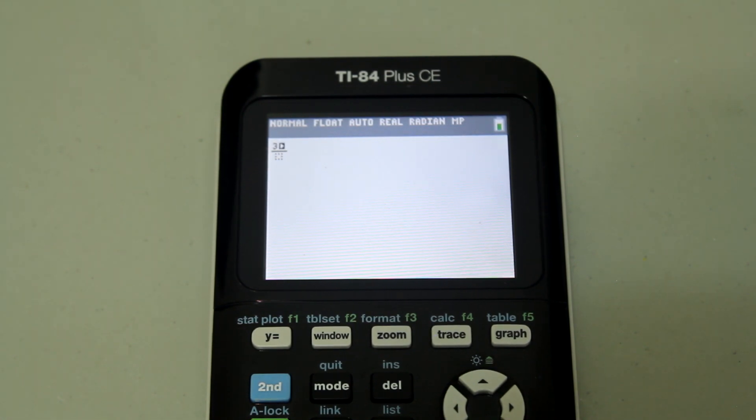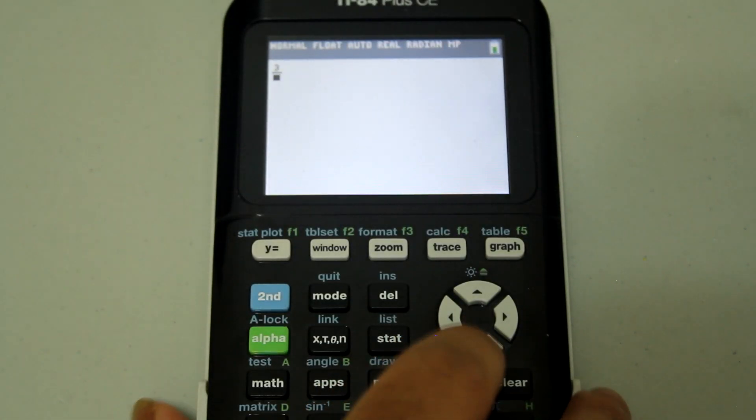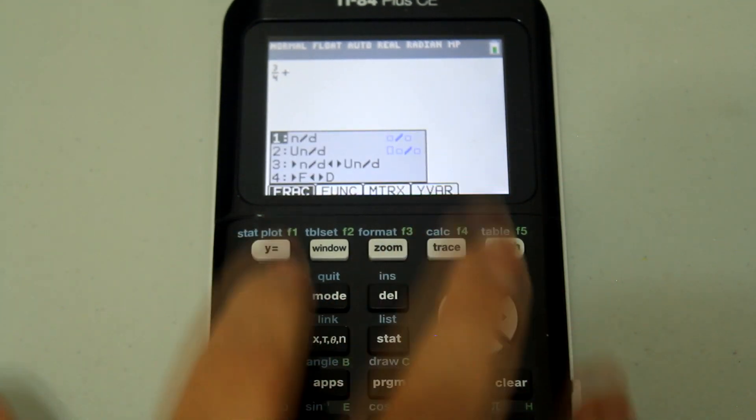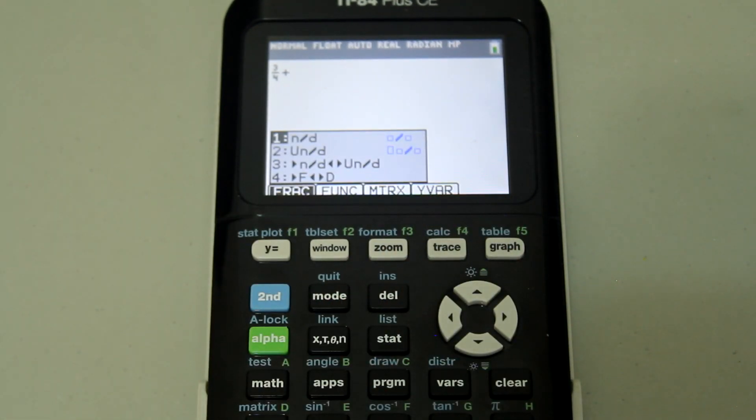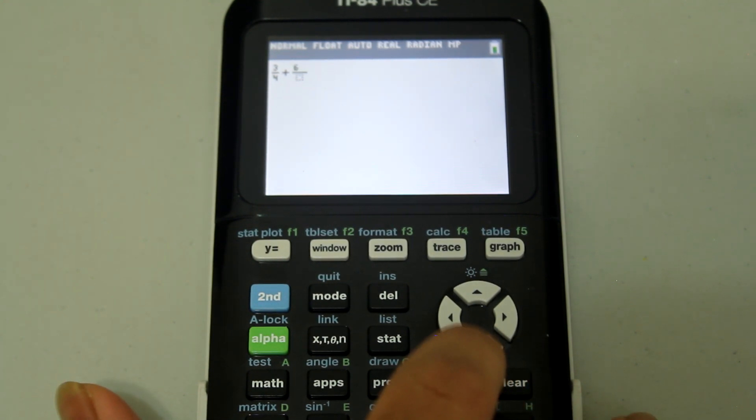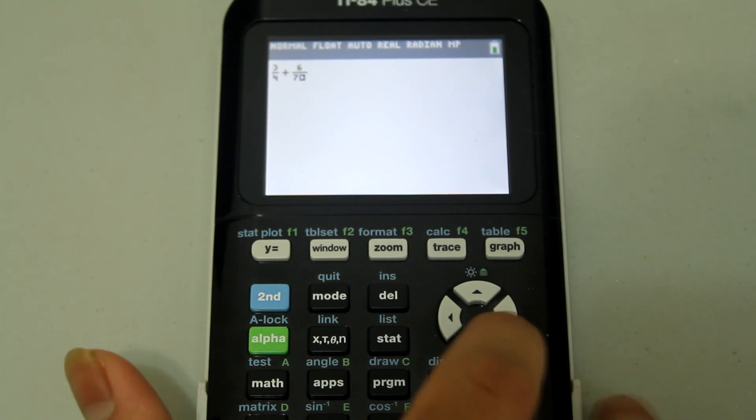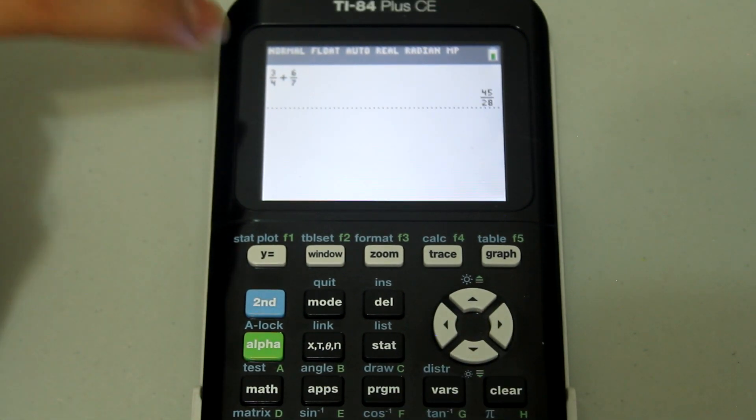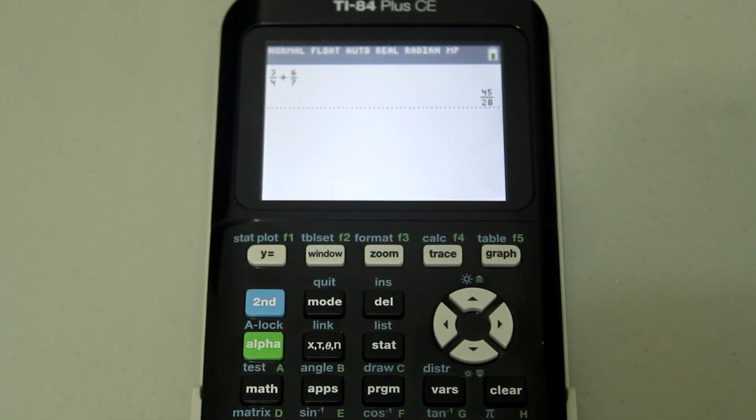Just hit enter and that brings up the fraction bar. Type in three and then arrow down four and then arrow right plus and then alpha y equals again. Select the first option once more, enter, six, arrow down seven and then arrow right and hit enter. And that gives you the answer in a fraction form and that is 45 over 28.